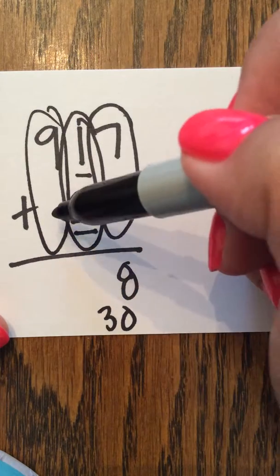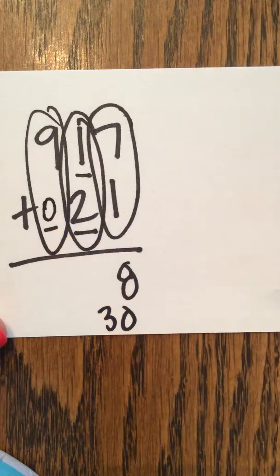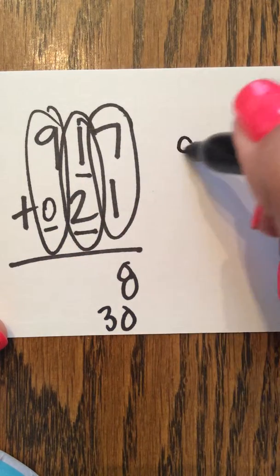Last, the hundreds column. Notice that this one doesn't have a number, so it's actually a 0. 900 plus 0 is 900.